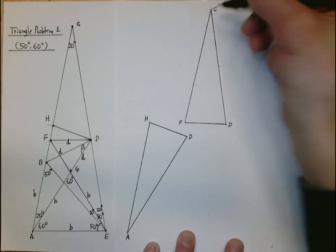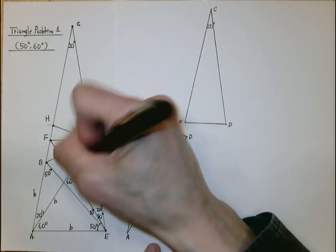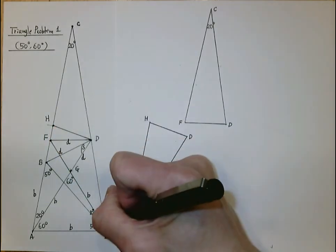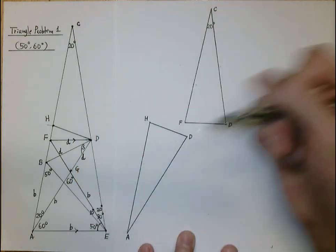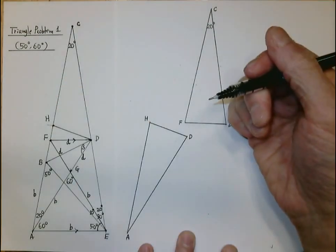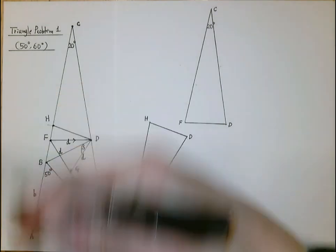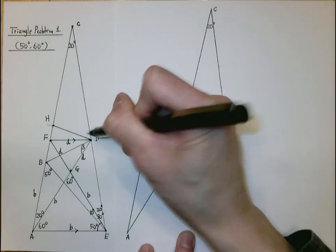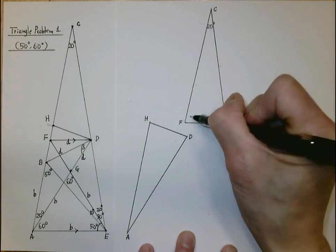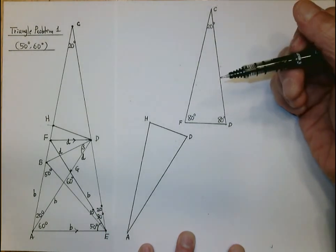Looking at triangle CFD: the angle at C is 20 degrees. Since the equilateral triangle gives us 60 degrees at both F and D, the alternate interior angles are congruent, meaning FD must be parallel to AE. Because these segments are parallel, the corresponding angles formed are congruent. The angle at E is 80 degrees, so the corresponding angle becomes 80 degrees too. By the same reasoning, the other corresponding angle is also 80 degrees, making triangle CFD isosceles.